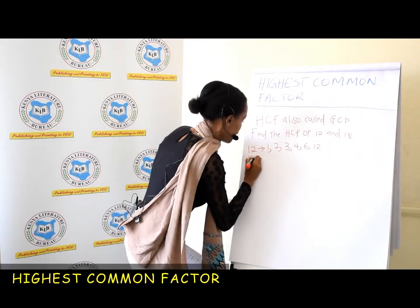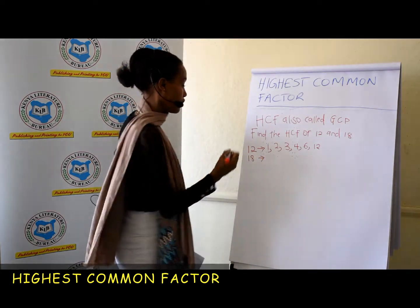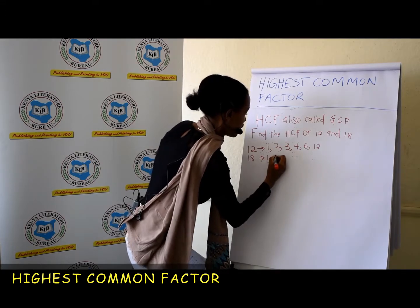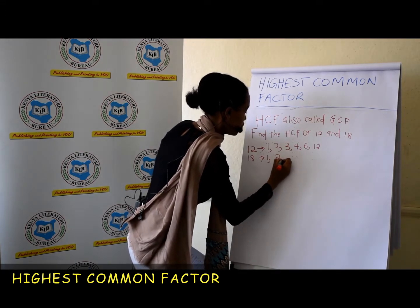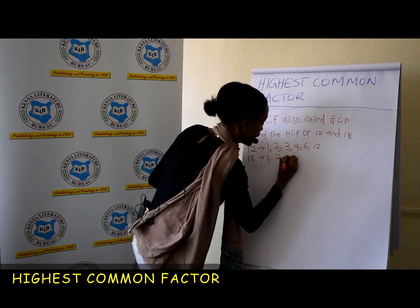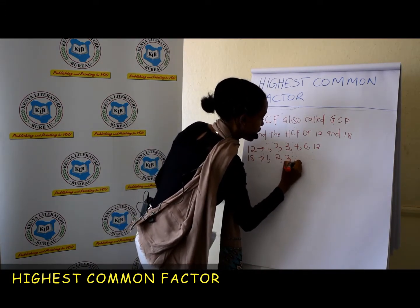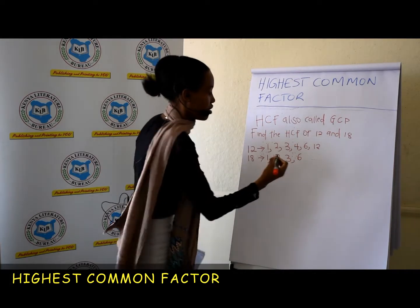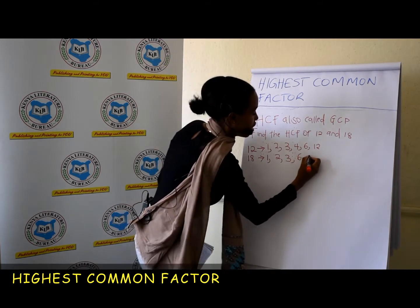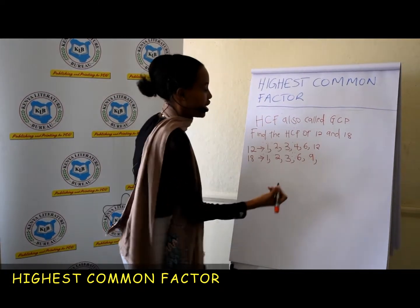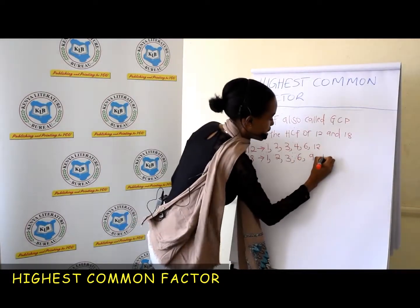The factors of 18 are 1, 2, 3, 6, 9, and 18.